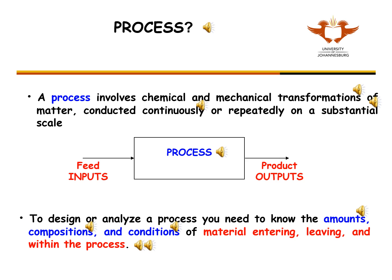Arrows will indicate where the material is entering, where it is leaving, and where it is in the process. So, for each of the feed, and the process, and the product, you need to be able to specify the amounts, compositions, and the conditions.